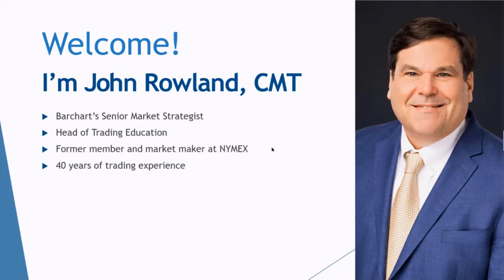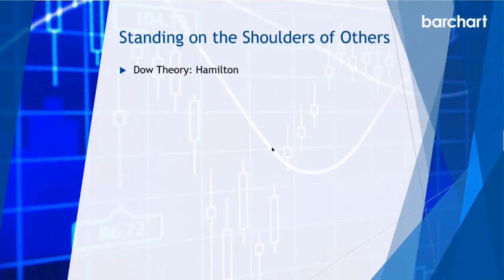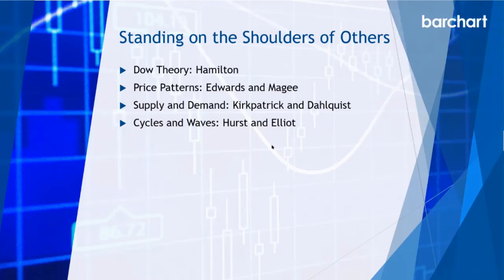I want to move away from my bio and talk about those who have influenced how I look at the market. There are a lot of them — for instance, Hamilton and his discussion of primary, secondary, and minor trends; McGee and Edwards who introduced recognition of different types of price patterns; Kirkpatrick and Dahlkos who introduced the idea of supply and demand and the imbalances between buyers and sellers; Hurst with his cycle theories; and Elliott with his wave theory — motive waves, corrective waves, impulse corrections — which will be part of my process.